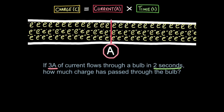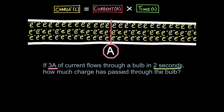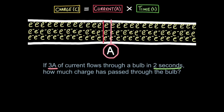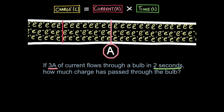A question you might get could be: if three amps of current flows through a bulb in two seconds, how much charge has passed through the bulb? We use an ammeter — a device that measures current, measured in amps or amperes. An ammeter measures how much current passes over time. So we time two seconds and over that time there's been a certain flow of charged particles, which is referred to as current. We simply multiply current — three amps — by time — two seconds — giving us six coulombs of charge.